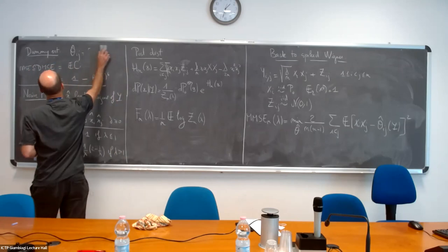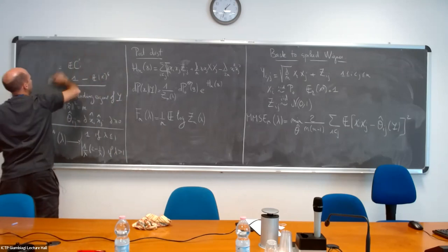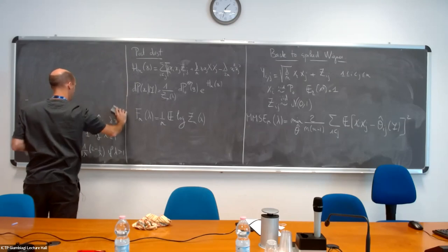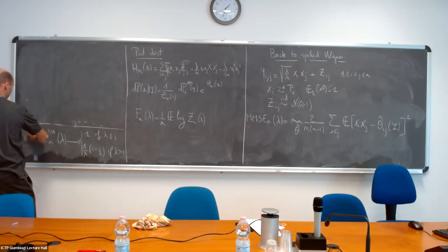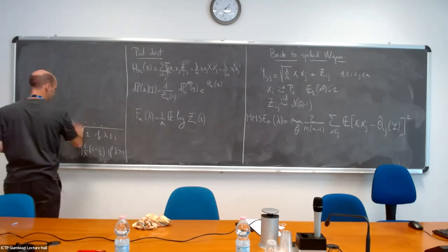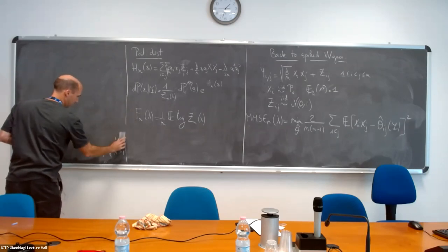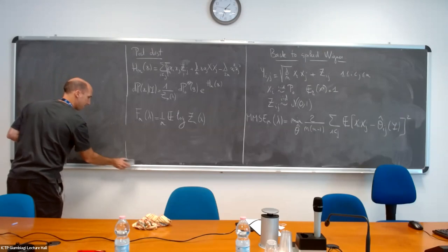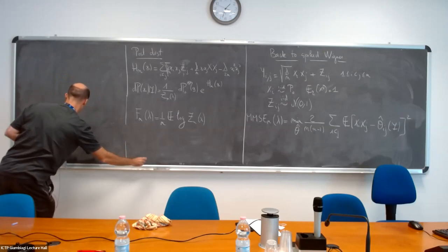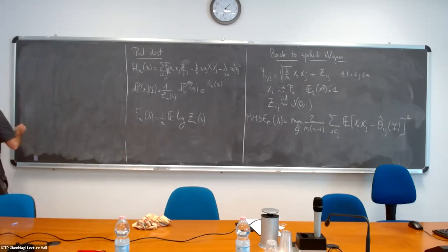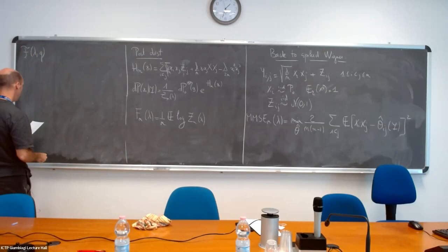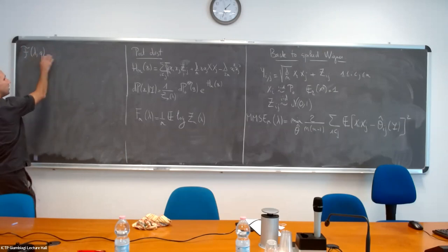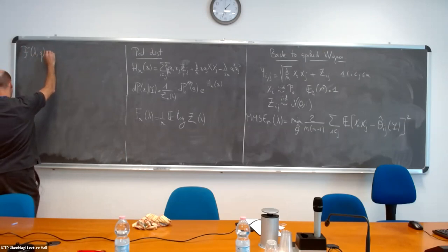Let's erase this. You need to keep in mind this formula in order to compare to the minimum mean square error. I'll define a function of two parameters: lambda, which is my lambda, and q, which will be the overlap.